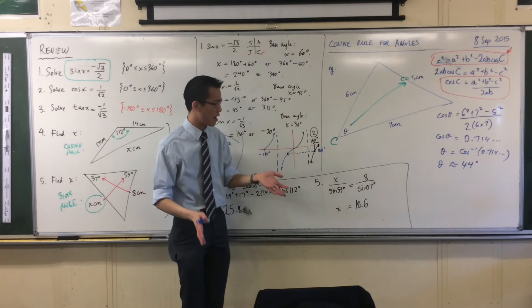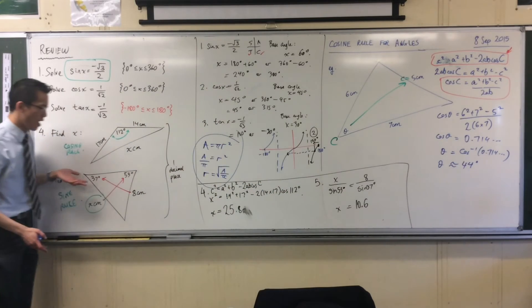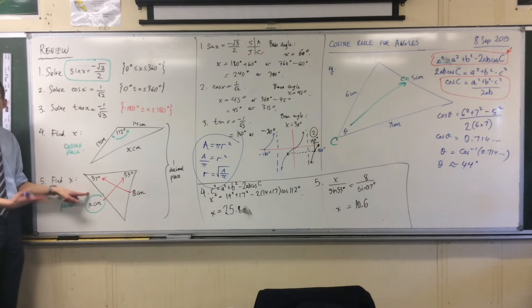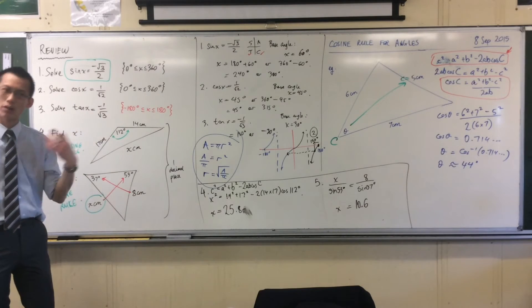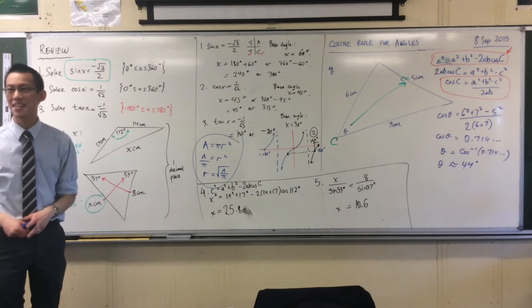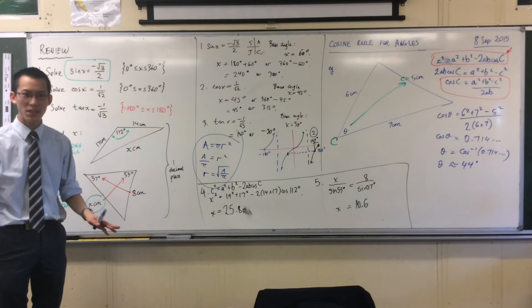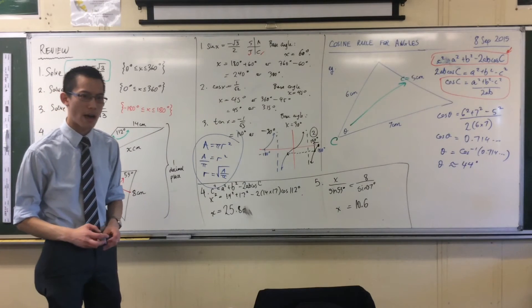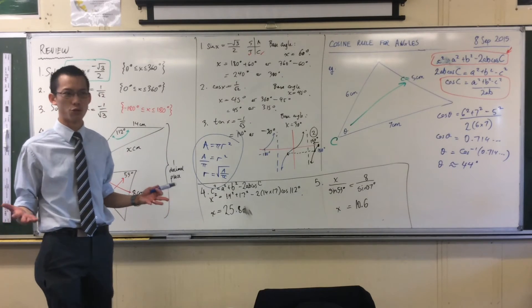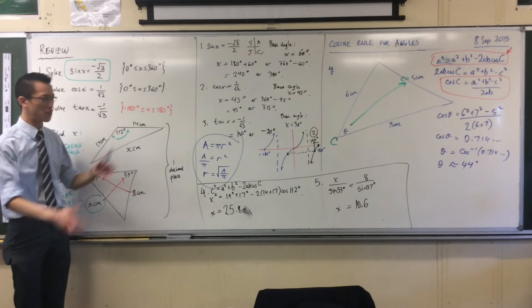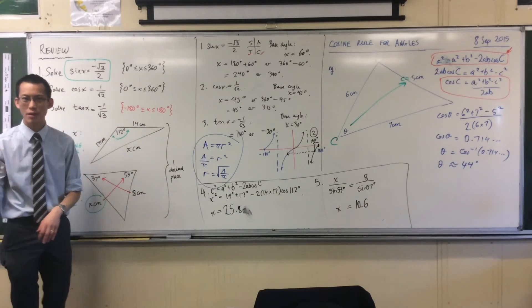Now, one more thing I want to ask: in the sine rule I had this ambiguous case — if I'm finding an angle it could be this or it could be that. Now the brilliant thing about the cosine rule is there's no ambiguity. But the question is: why does the sine rule leave us with a question mark when you have to do that thing with the angle sum, but the cosine rule doesn't?